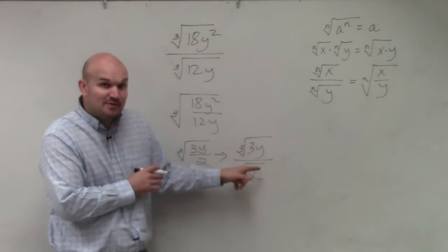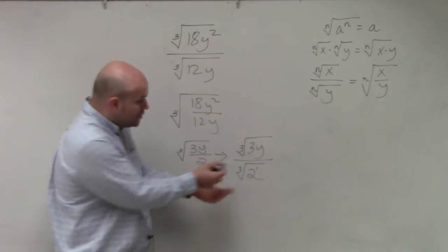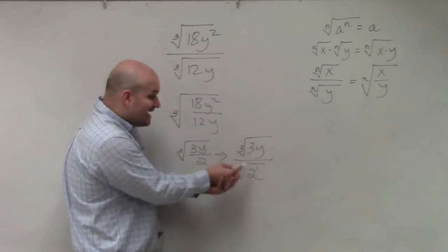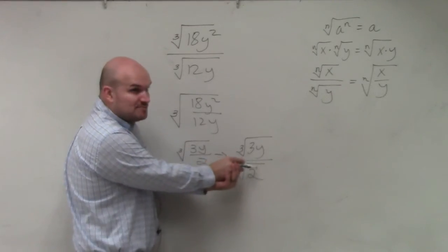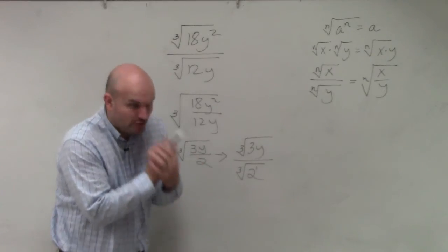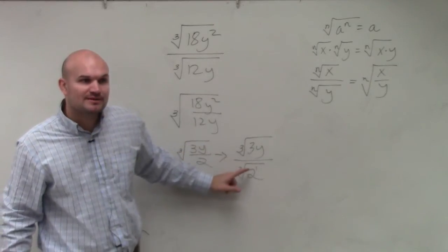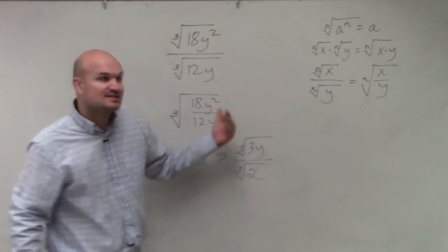I need this 2 to be raised to the third power, right? 2 is being raised to the first power. I can't take the cube root of 2 to the first power. I can only take the cube root of 2 to the third power. So what do I need to multiply 2 to the first by to get it to be 2 cubed? 2 to the second power.